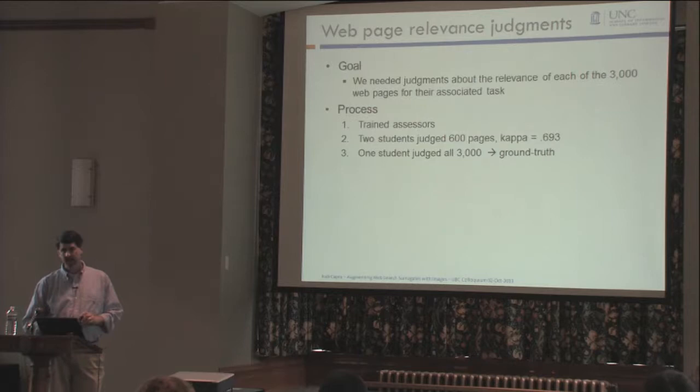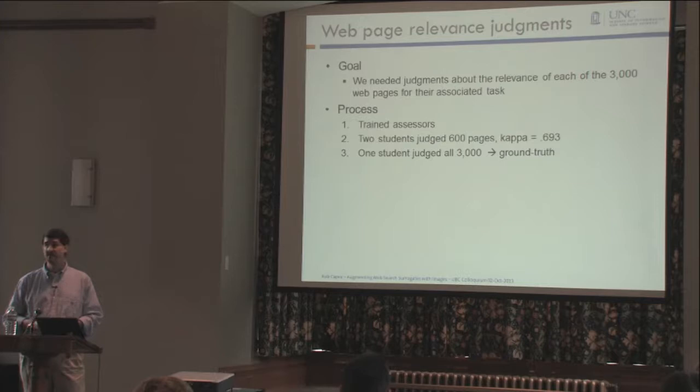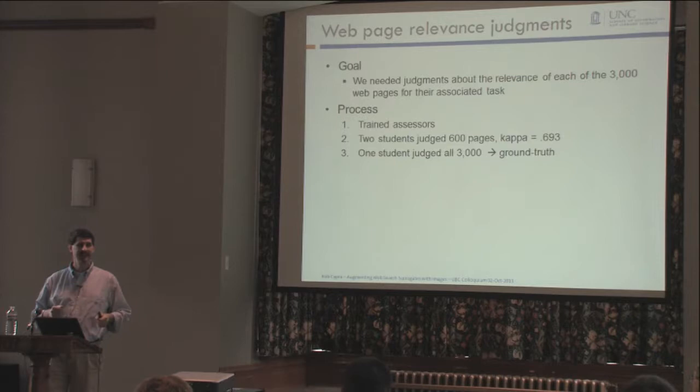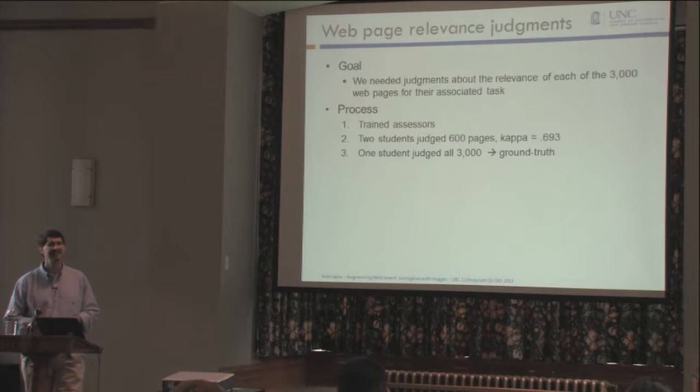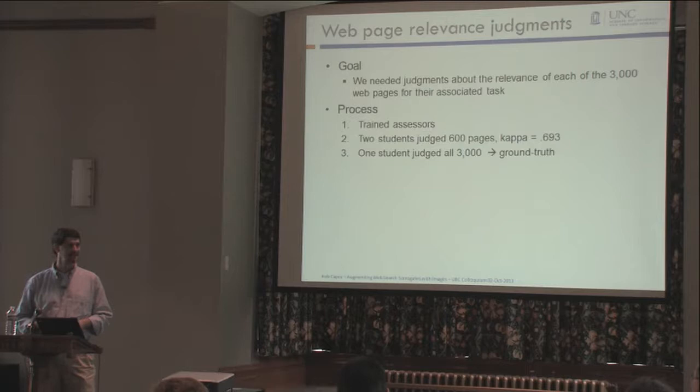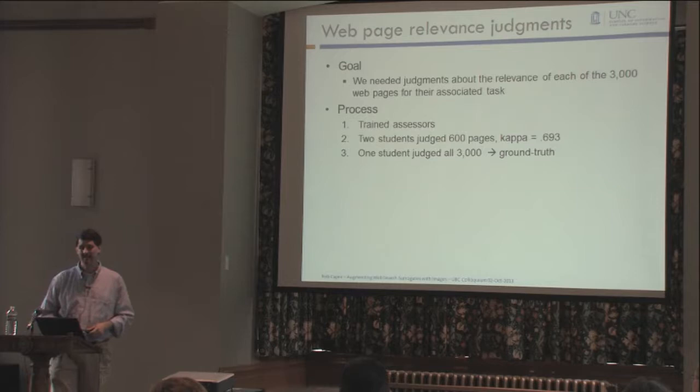We also needed ground truth — is this page really relevant to this task? We had 3,000 web pages and needed judgments, so we got trained assessors — meaning graduate students. We had two graduate students go through the pages; we had two of them do 600 together, and they had high enough agreement that we then had one person do all the rest. We treated that as our ground truth for accuracy and precision measures.